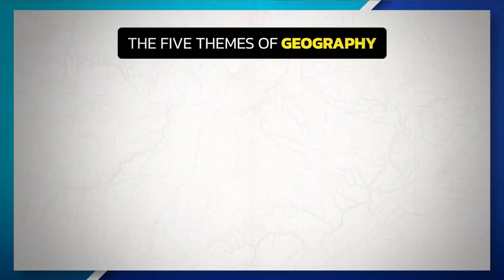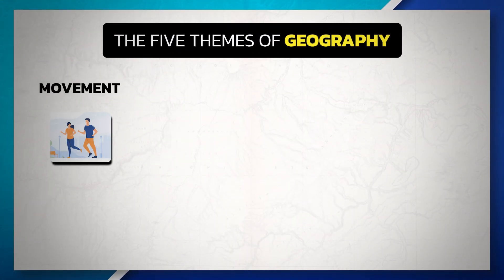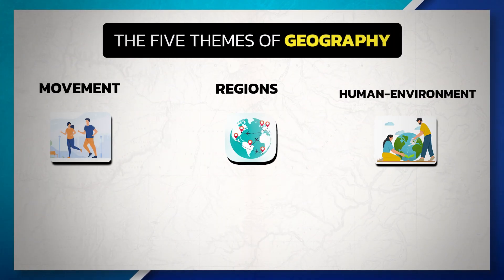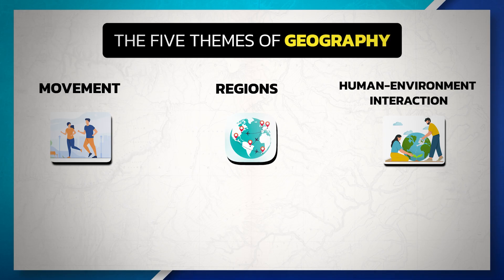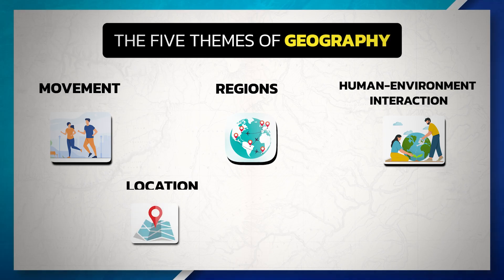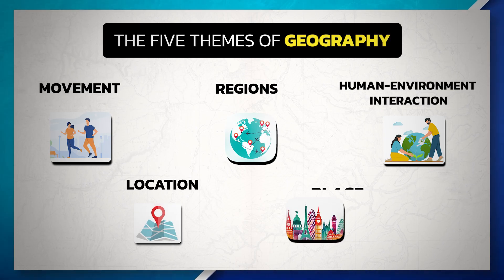The five themes of geography consist of movement, regions, human-environment interaction, location, and place. Understanding these five themes allows us to understand the world around us.